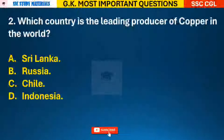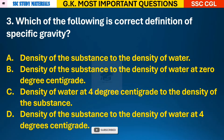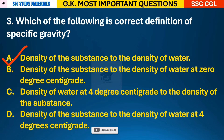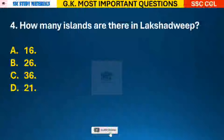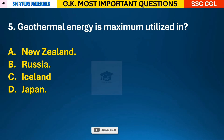Question 2: Which country is the leading producer of copper in the world? Answer C - Chile. Question 3: Which of the following is the correct definition of specific gravity? Answer A - density of the substance to the density of water. Question 4: How many islands are there in Lakshadweep? Answer C - there are 36 islands in Lakshadweep.